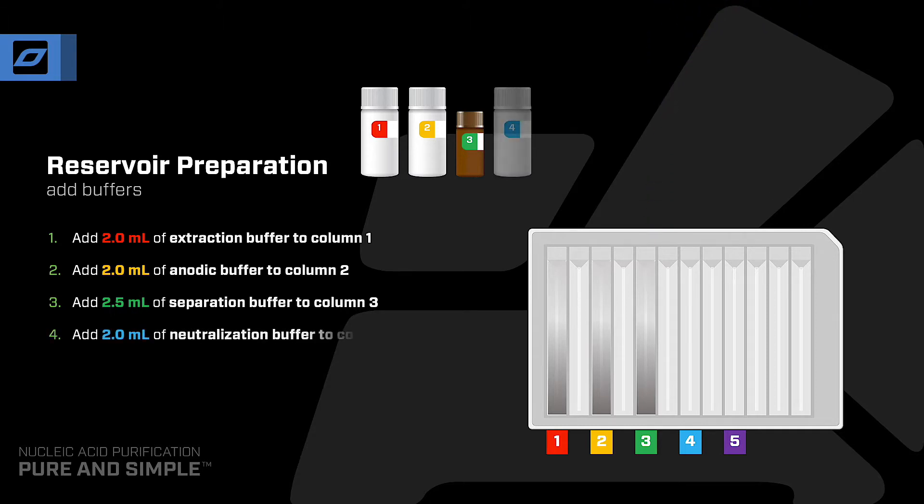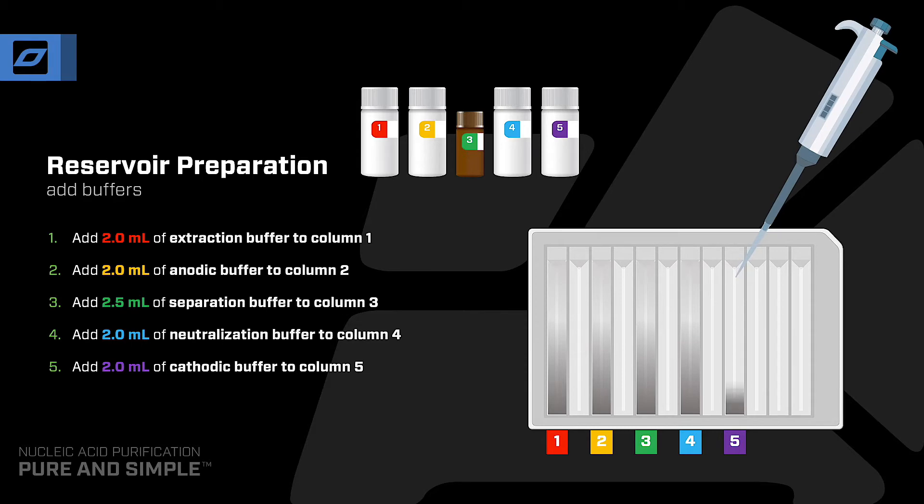Column 4 contains 2 milliliters of neutralization buffer. And Column 5 contains 2 milliliters of cathodic buffer.